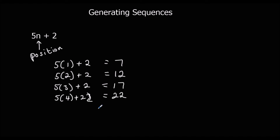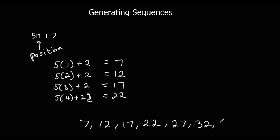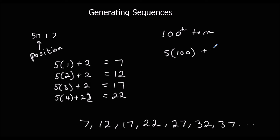So what we're getting now is a sequence of terms — it's going to keep going, adding on 5 every time: 32, 37, and so on. If I wanted to find the 100th term, I'd have to do 5 multiplied by 100 plus 2, which is 500 plus 2, that's 502. So if I kept going until the 100th term, that would be 502.